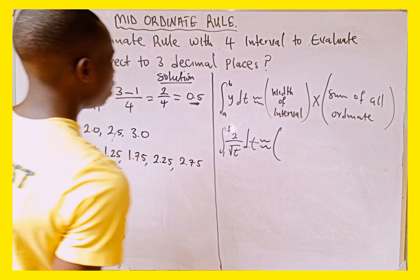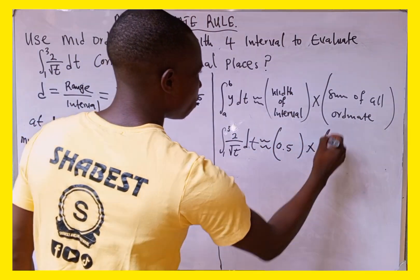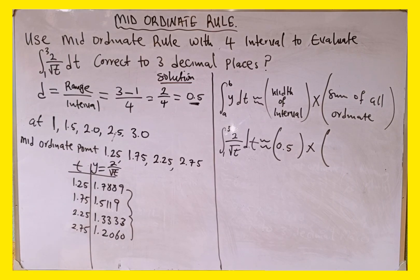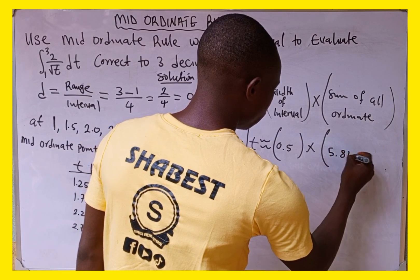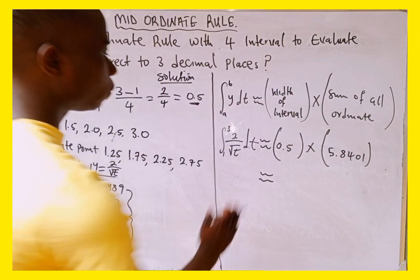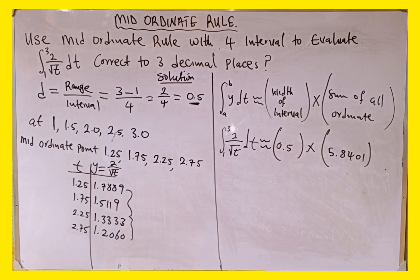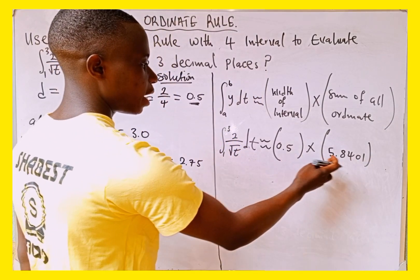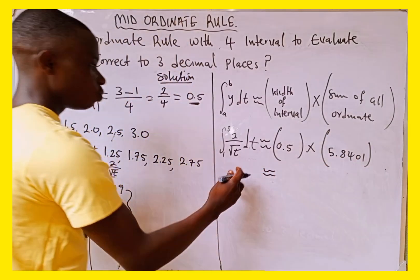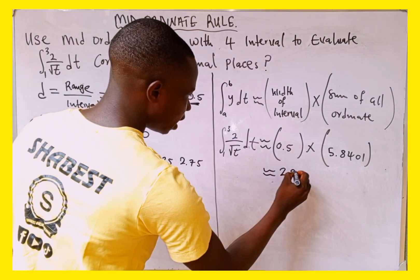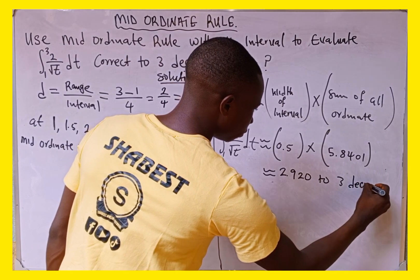Substituting: 0.5 multiplied by the sum of the four mid-ordinates. Summing 1.7889 + 1.5119 + 1.3333 + 1.2060 gives 5.8401. Then 0.5 × 5.8401 = 2.920, correct to three decimal places. We have successfully evaluated this integral using the mid-ordinate rule.